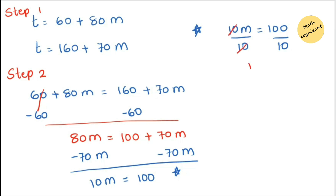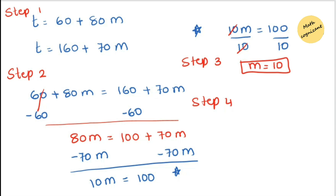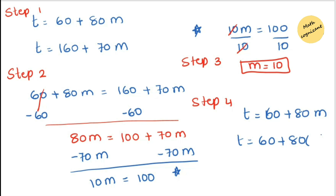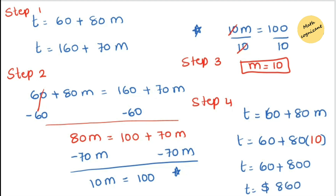The next step is to find the total cost at 10 months. Substitute m equals 10 into the first equation: t equals 60 plus 80 times 10. 80 times 10 equals 800, and 60 plus 800 equals 860. That means after 10 months the total cost equals $860 for both providers.